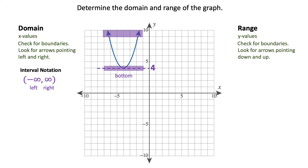So the range starts at positive 4 and increases upward. Those arrows point upward to positive infinity because the arrows keep that graph going. To express this in interval notation, you're going to use a bracket on the 4 for the bottom as your least possible value, and then it approaches infinity as your greatest possible value. And that's the range for this graph.